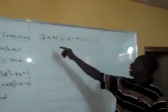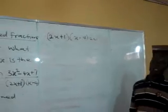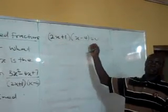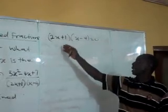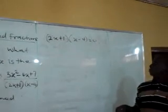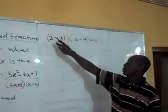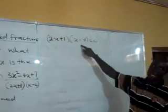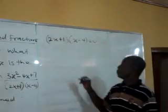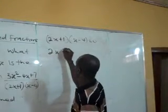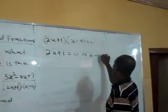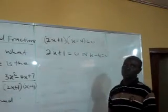With this, we will now find the value of x. If you look at this expression, you discover that it has been factorized for us. We have a factor 2x plus 1 and another factor x minus 4. So it means you have 2x plus 1 equals to 0 or x minus 4 equals to 0.